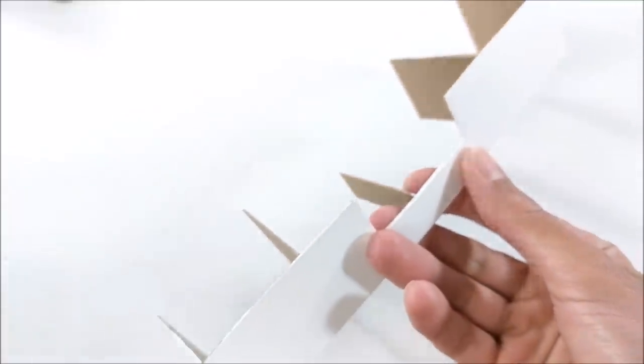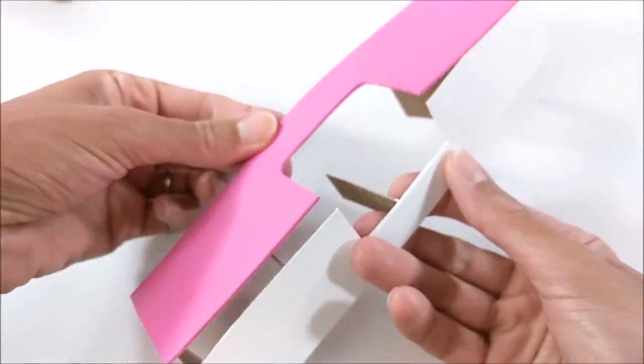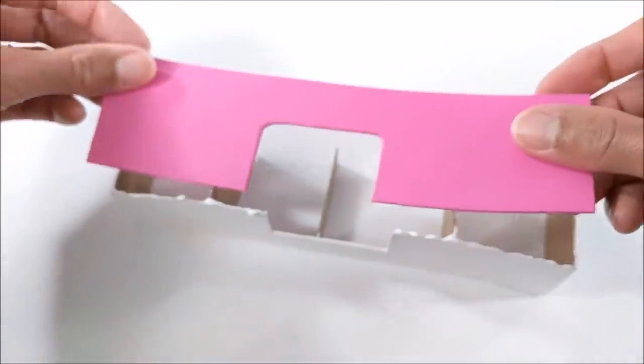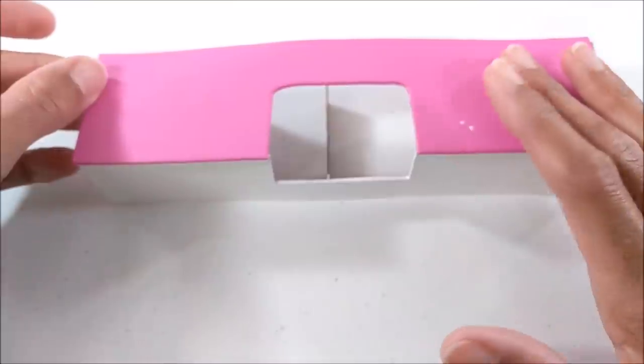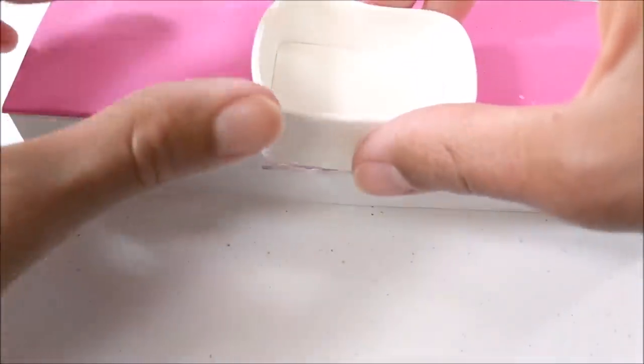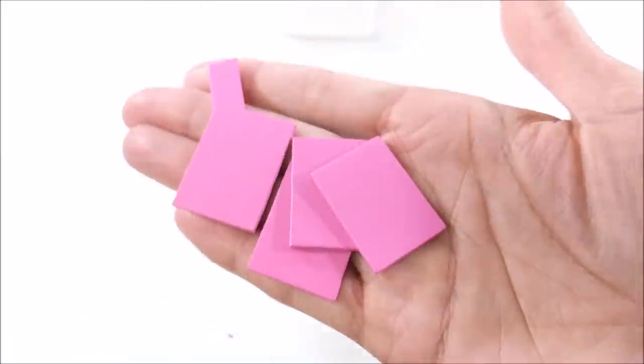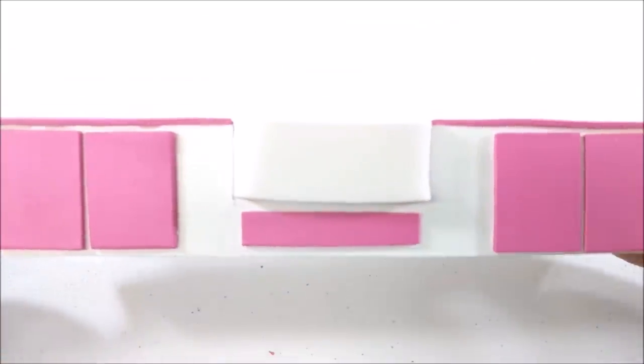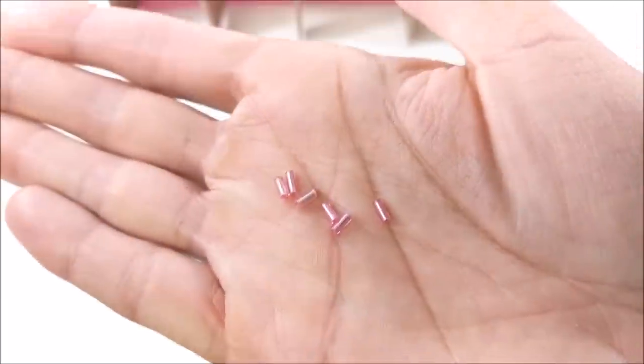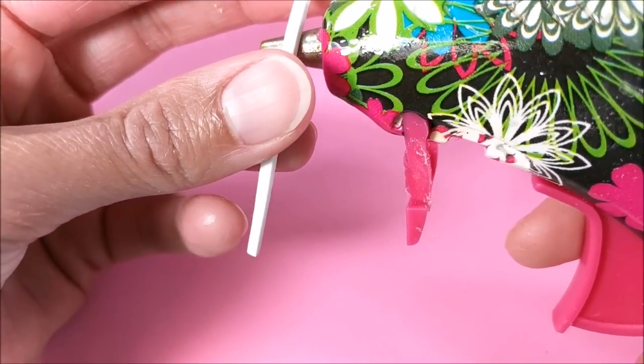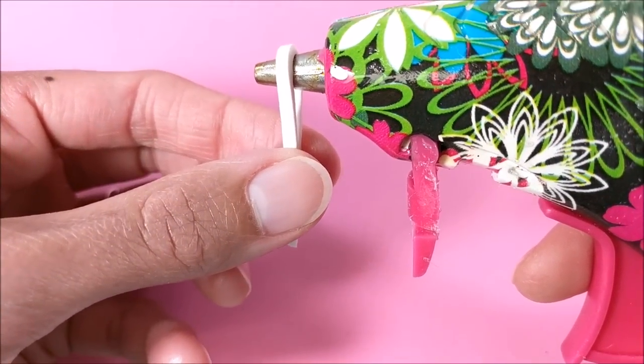When everything's dry, I glue in place and add beads for details. For the sink, again more craft foam - you can shape it using heat from your hot glue gun, carefully of course.